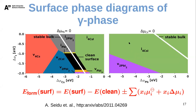Looking at the surface phase diagrams of the gamma phase, we see a similar pattern to the alpha phase. The most stable surfaces are the same as in the alpha phase, and at Δμ_Cs = 0 we see the same kinds of configurations.